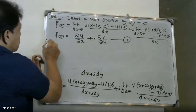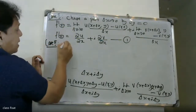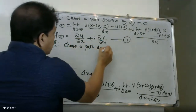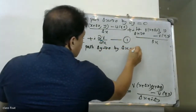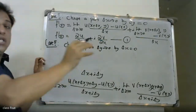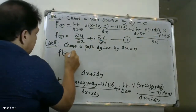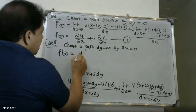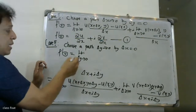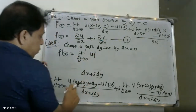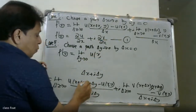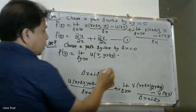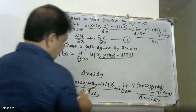At the end of case one path, where delta y = 0 and delta x tends to 0, f'(z) equals partial u by partial x plus i into partial v by partial x. That is: f'(z) = ∂u/∂x + i·∂v/∂x.